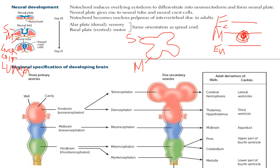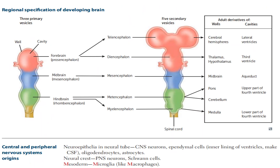The neural crest cells are getting developed into the PNS, and the neural tube is of course going to get developed into the central nervous system. Now let's see the regional specification of the developing brain, which is basically the neural tube.